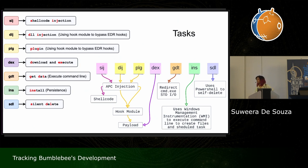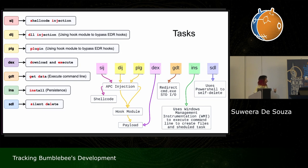They are able to inject shellcodes as well as DLLs — two types: secondary payloads in DLL form, or plugins also in DLL form. For DLLs, the payload is injected along with the hook module, which also has an EDR evasion role that I'll discuss shortly.